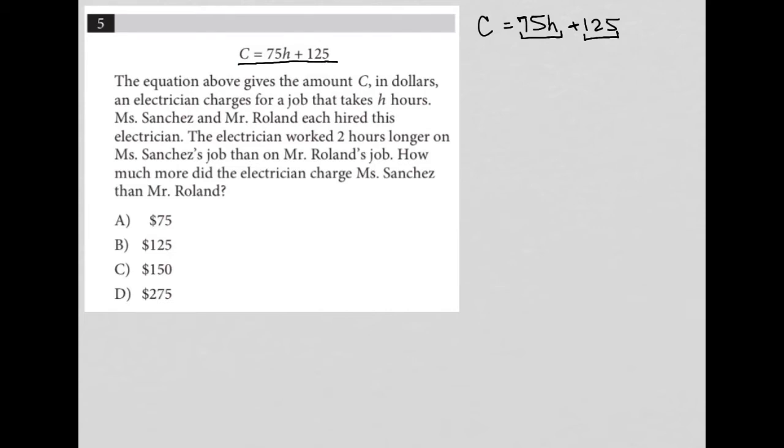Ms. Sanchez and Mr. Rowland each hired this electrician. The electrician worked two hours longer on Ms. Sanchez's job. So I'm going to have S for Sanchez, R for Rowland. The electrician worked two hours longer on Ms. Sanchez's job, so H plus two versus R. So it's going to be H for Rowland. This means that Sanchez worked an additional two hours than the electrician did for Rowland.